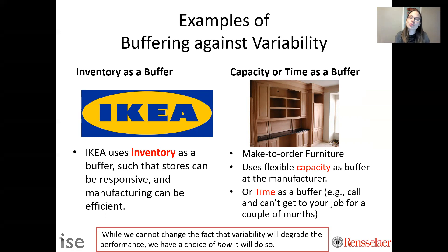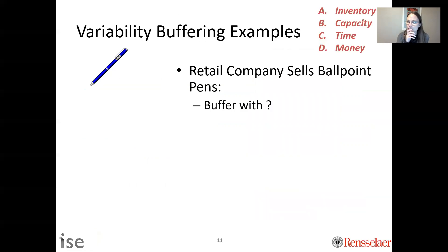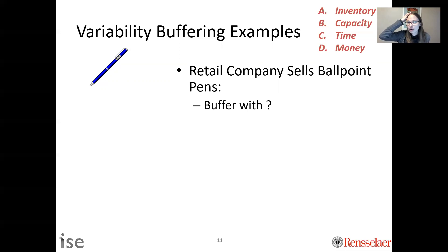The appropriate choice is influenced by the system, cost, requirements, and ethics. For example, if you're a retail company selling ballpoint pens, what's the most appropriate buffer — inventory, capacity, time, or money? The correct answer is inventory. Ballpoint pens are extremely cheap, so holding inventory isn't expensive. At a retail store you're not producing things, so when customers come in to buy a pen, there's usually inventory available. Inventory is the most obvious buffering approach for a retail company selling ballpoint pens.